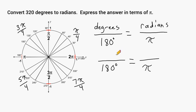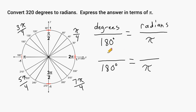To convert 360 degrees to radians: because the top is double the bottom, that means the right side's top should be double its bottom. So we write 2 pi — meaning 360 degrees equals 2 pi radians. For 90 degrees, the numerator is half of the denominator, so we take pi and divide it by 2. Therefore, 90 degrees converted to radians is pi over 2, as shown on our unit circle.